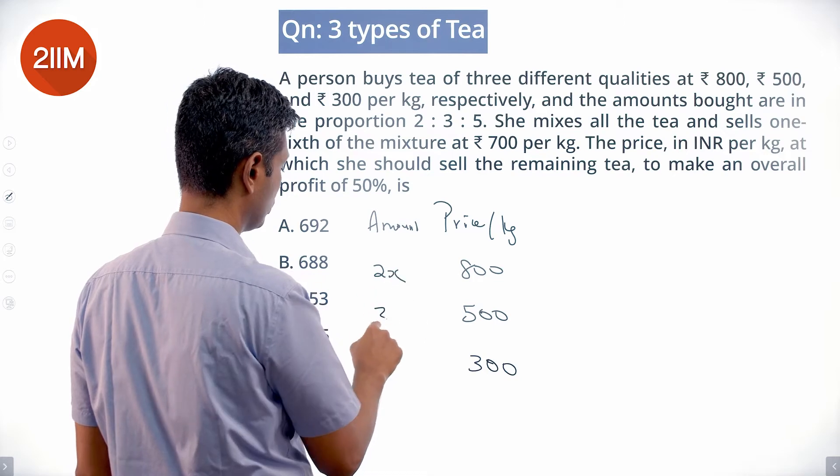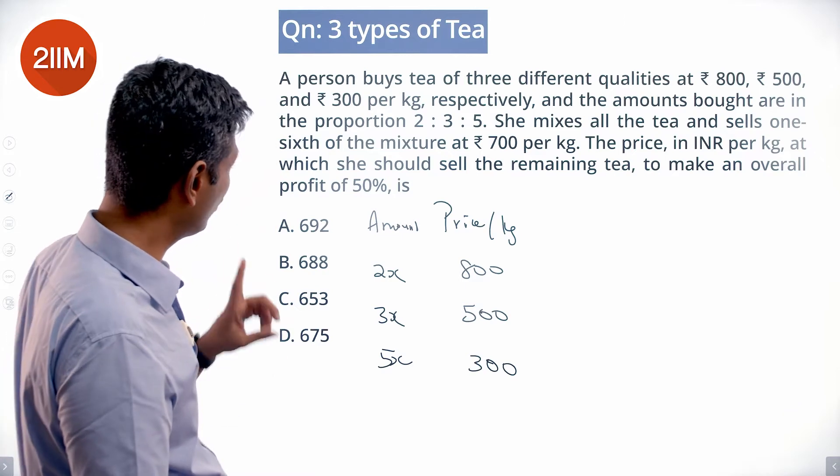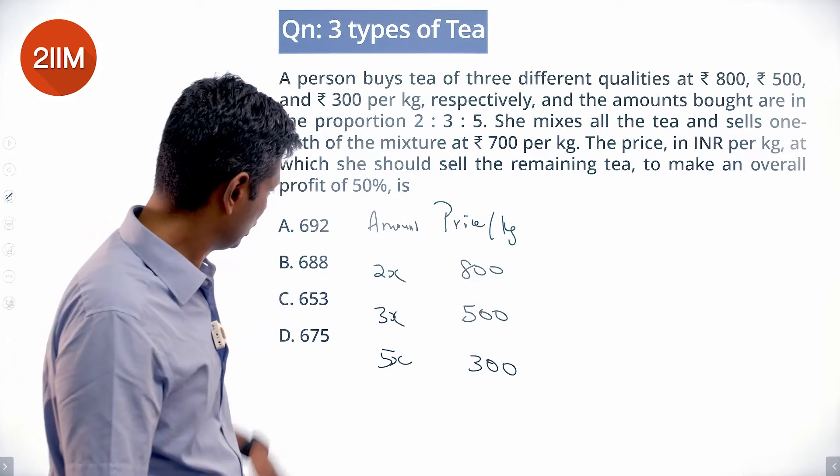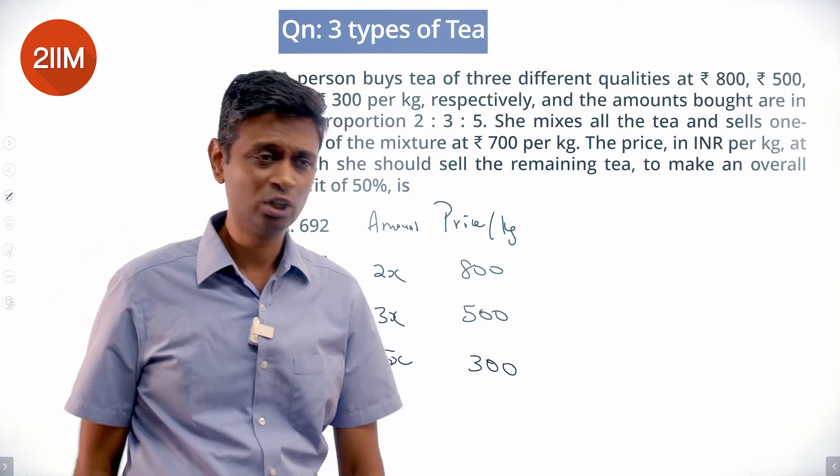So we have 2x, 3x, 5x kilograms. She mixes all the tea and sells one-sixth of the mixture at 700 per kilogram. 2 plus 3 plus 5 adds up to 10. It's tougher to do one-sixth, so what I'm going to do is multiply this by 3.